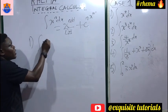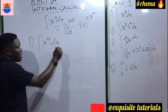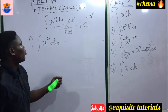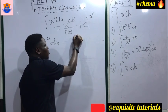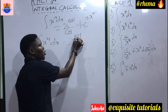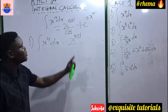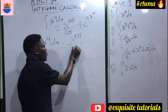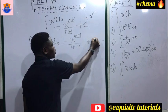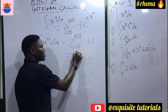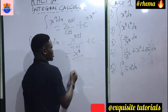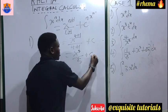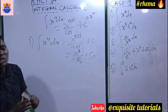Question 1: integrate x raised to power 4 dx. Following the formula, we add one to the power: 4 plus 1, and divide by the result. Do not divide by only 4 — you must add 1 to get 5. So the answer is x raised to power 5 over 5, plus C.